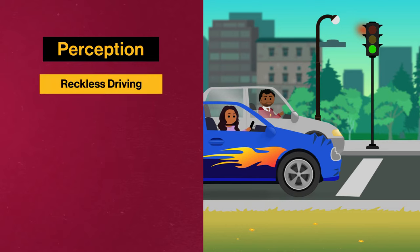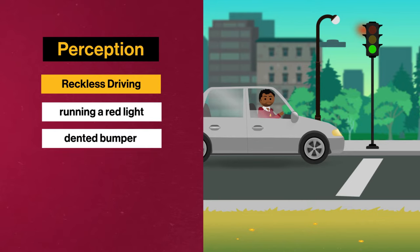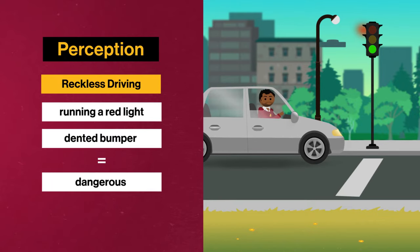But the perception process doesn't end there. It starts over again the second the driver revs up and runs the red light. Your brain selects the stimulus of the car speeding off, then organizes that behavior into the category of reckless driving. Based on your existing cognitive patterns, your brain takes the dented bumper, adds in the reckless driving, and concludes that the driver is dangerous.